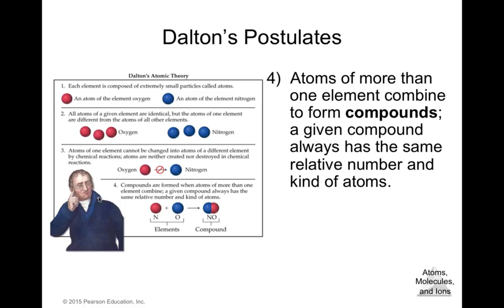Atoms of more than one element combine to form compounds. A given compound always has the same relative numbers and kinds of atoms. For example, nitrogen monoxide (NO) consists of one atom of nitrogen and one atom of oxygen, producing that compound — a combination of atoms that creates a compound.